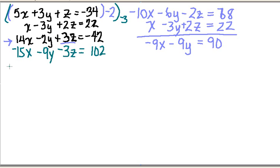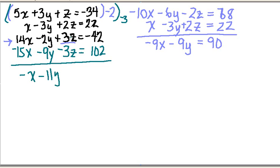So now I can combine these two equations and once again eliminate my z. Minus 15x and positive 14x gives me a minus x. Minus 9y plus a minus 2y gives me a minus 11y. My z's eliminate each other — 3z minus 3z gives me 0. And over here I've got 102 and a negative 42, which leaves me 60.